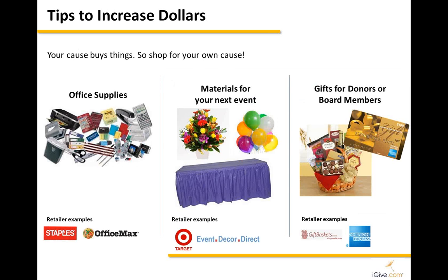We recently interviewed a bunch of causes to find out what we could do better, and most of them said they're buying things at Staples, OfficeMax, and Target that help the cause, and it adds up. We have one person who works for a reasonably large cause who receives a check from iGive of about $1,000 a month because she's buying everything for the office. We have another person who generates $6,000 a year because they go through a lot of office supplies.